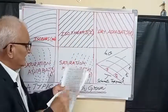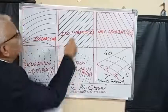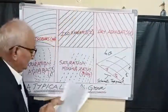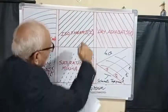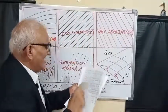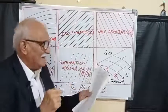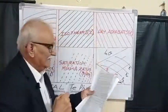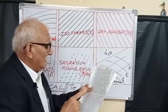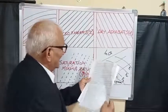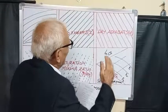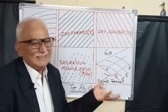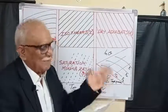Isotherm lines are straight solid lines. Dry adiabatic lines are lines of constant potential temperature — these are also straight solid lines sloping from lower right to upper left.